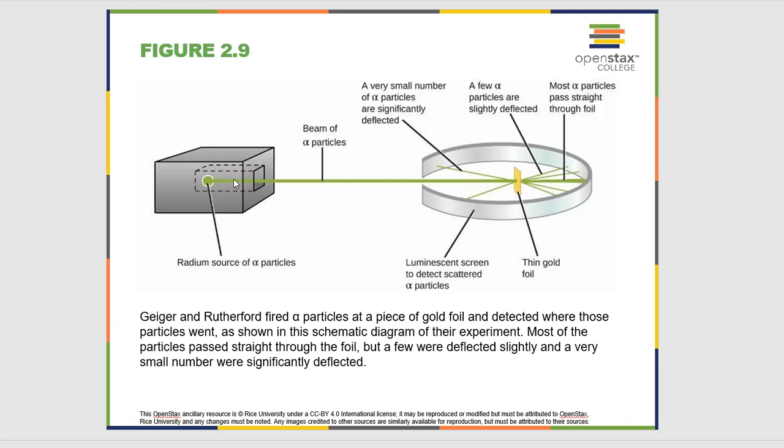And they shot alpha particles at this, which are essentially helium nuclei. So when these particles, which are positively charged, fly towards this gold foil, if the gold foil was mostly empty space, most of the alpha particles would fly right through.